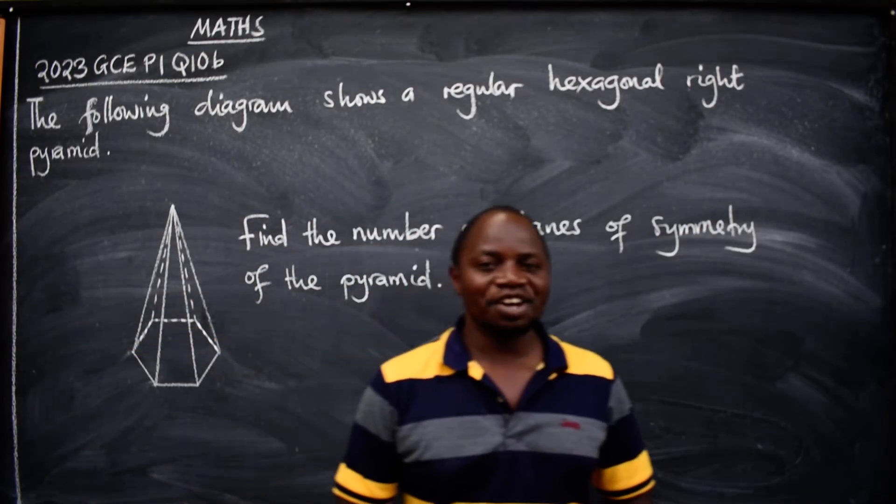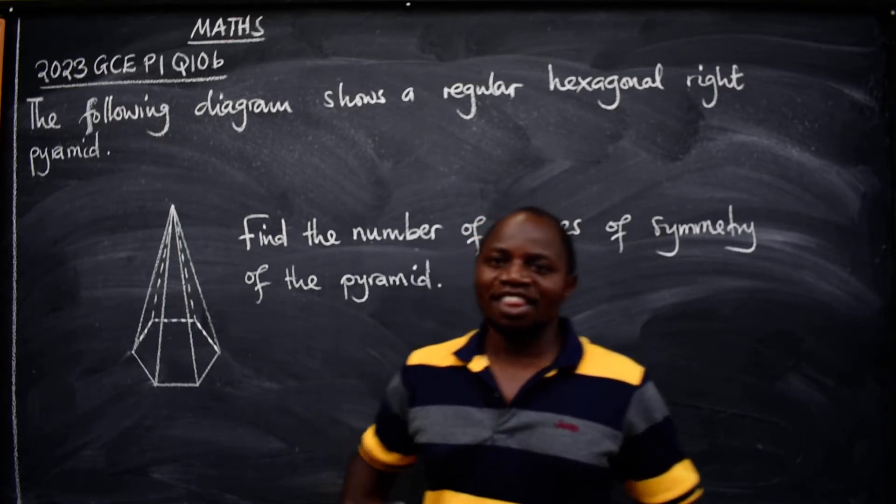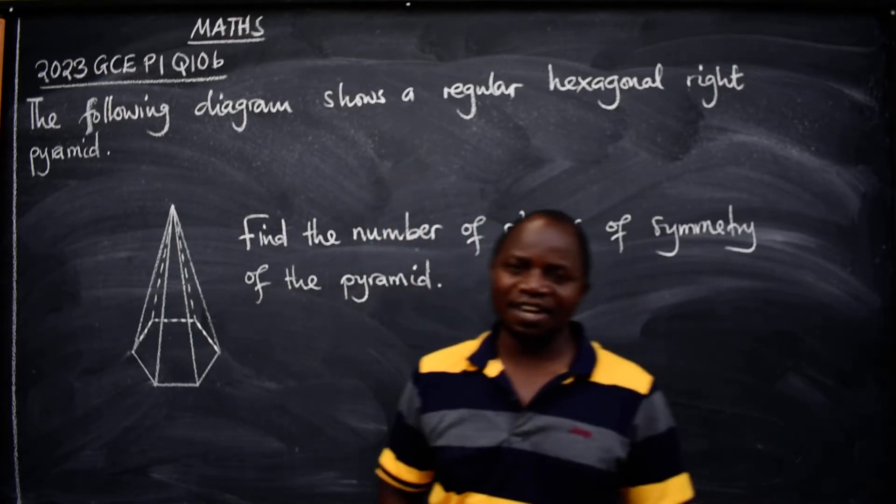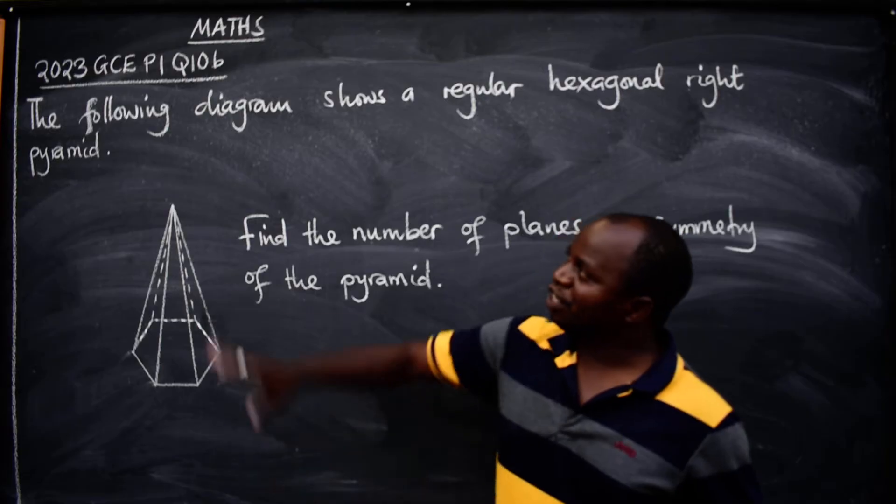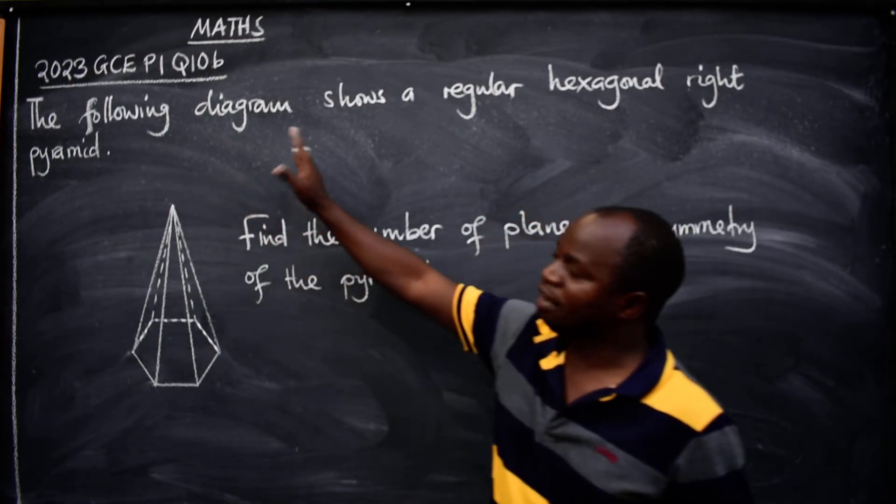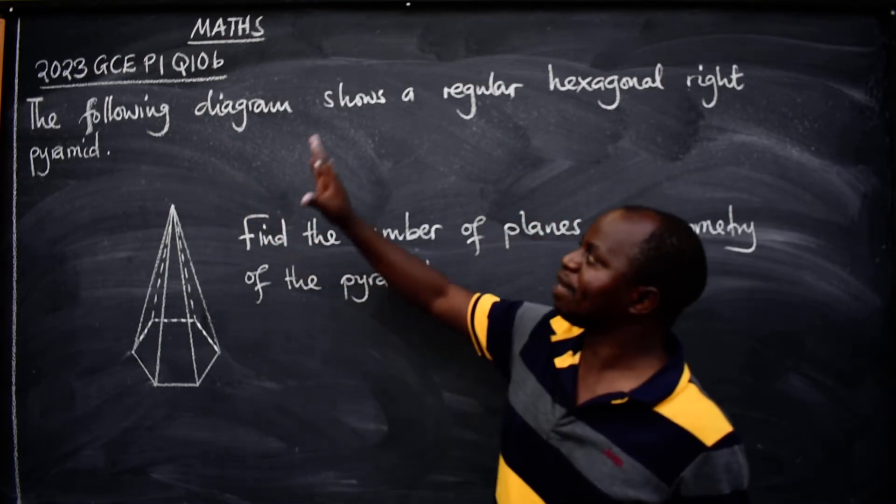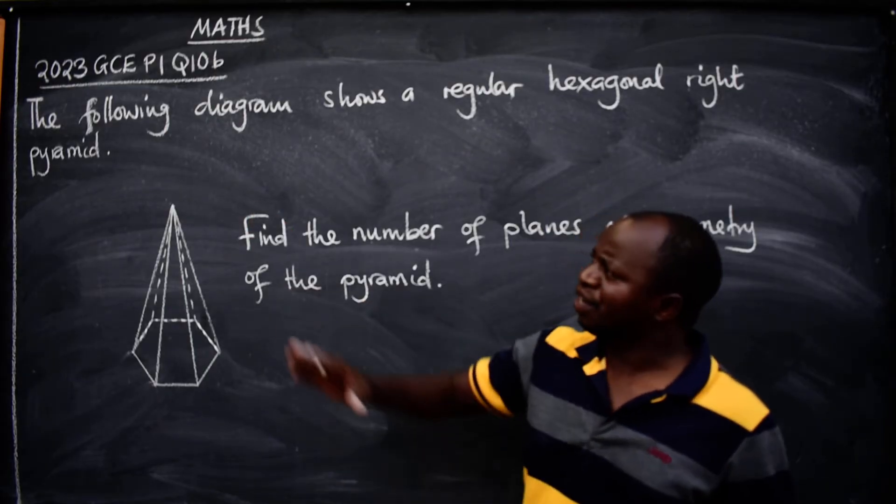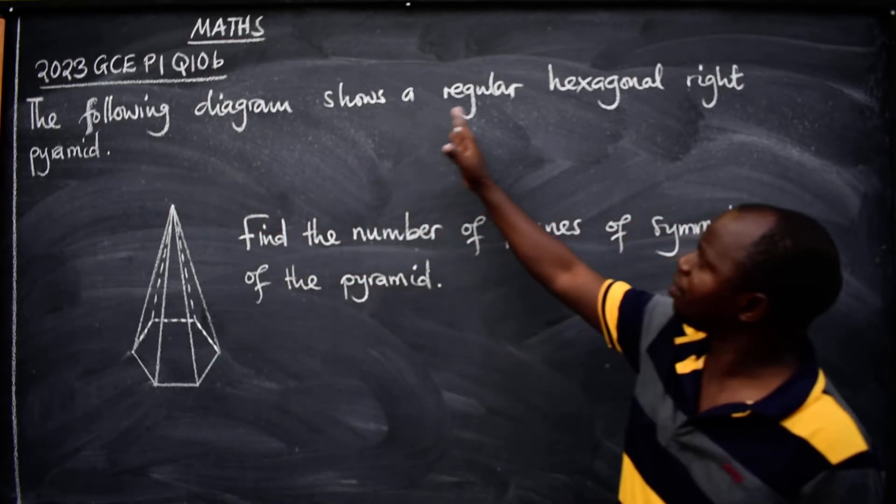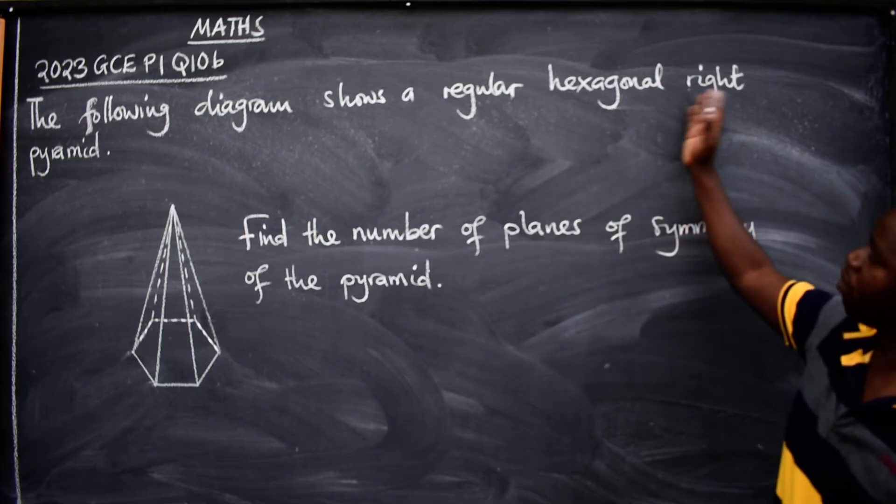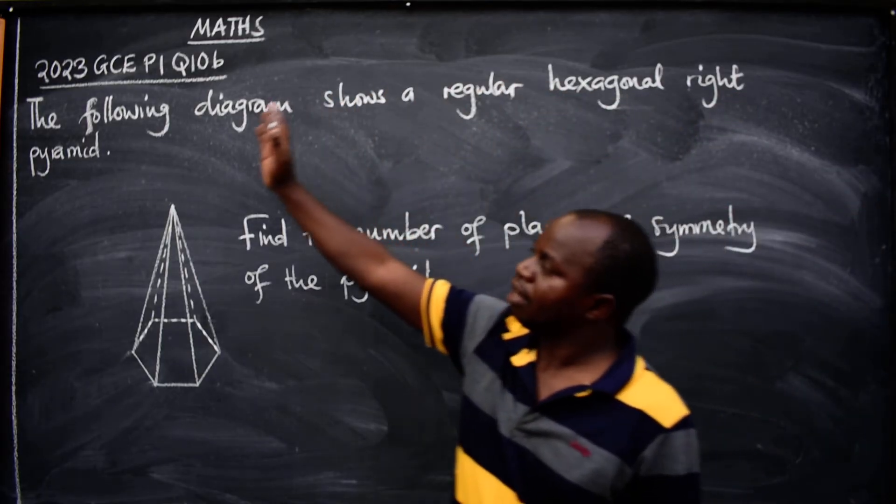Hello dear friends, hope you are doing well. This is mathematics and in this video we want to look at the 2023 GCE Paper 1 Question 10b. The question reads: the following diagram shows a regular hexagonal right pyramid.